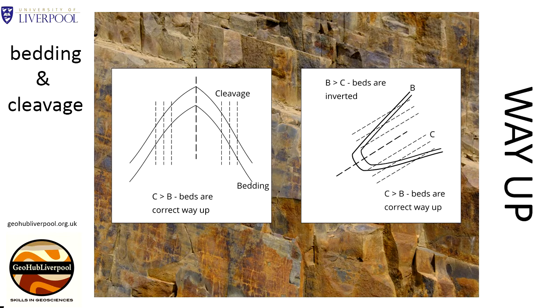The diagram on the right hand side shows a fold which has one overturned limb. Note that in this diagram it shows that on the overturned limb the cleavage has a lower angle of dip than the bedding.